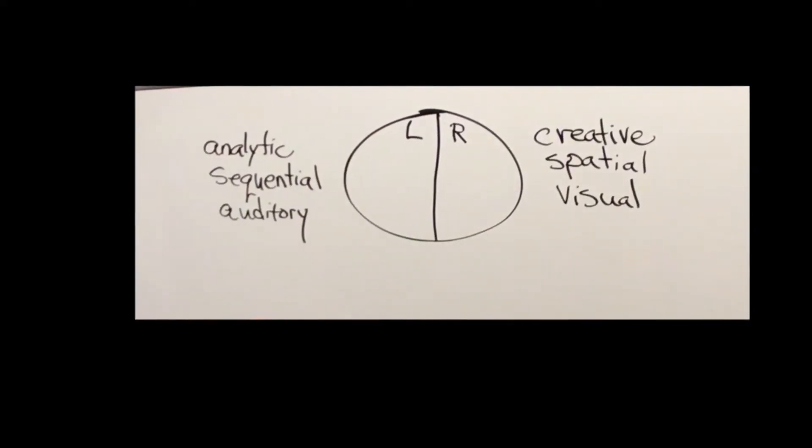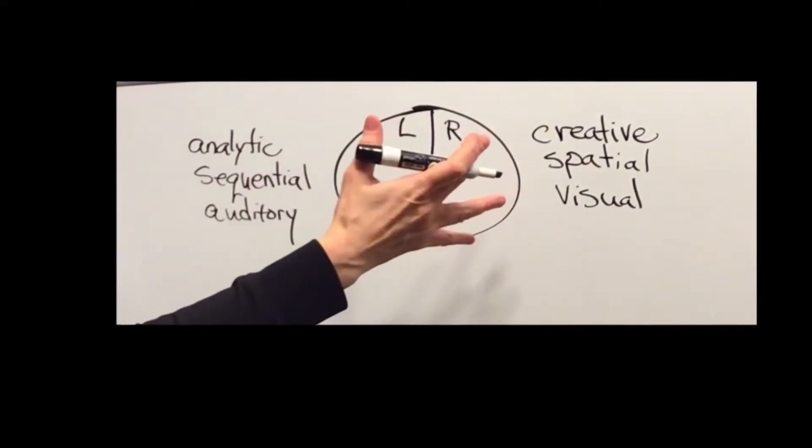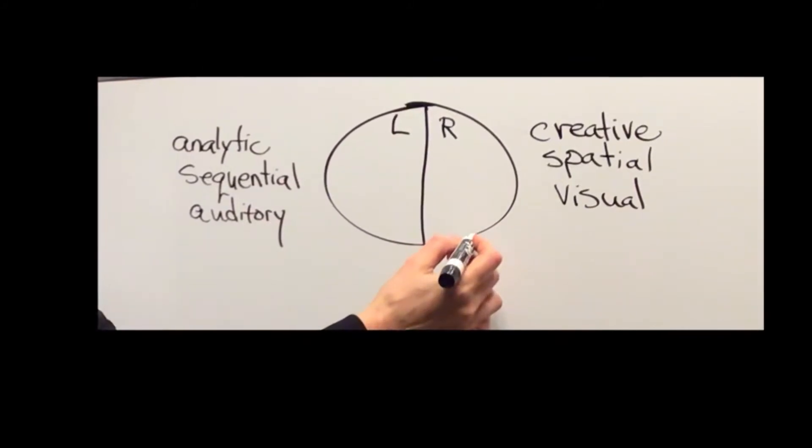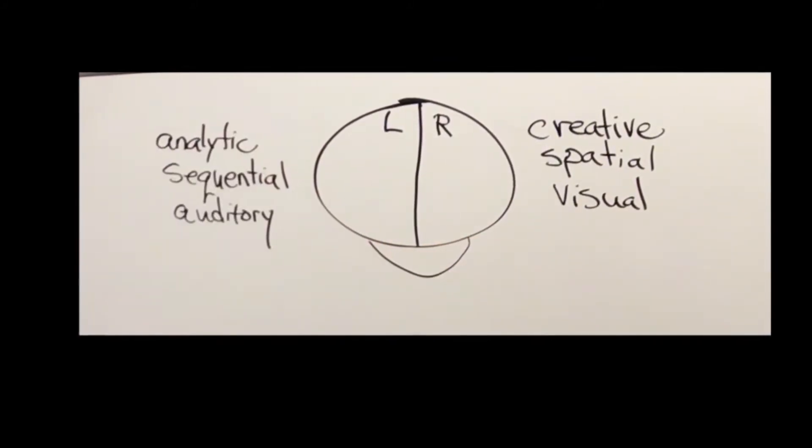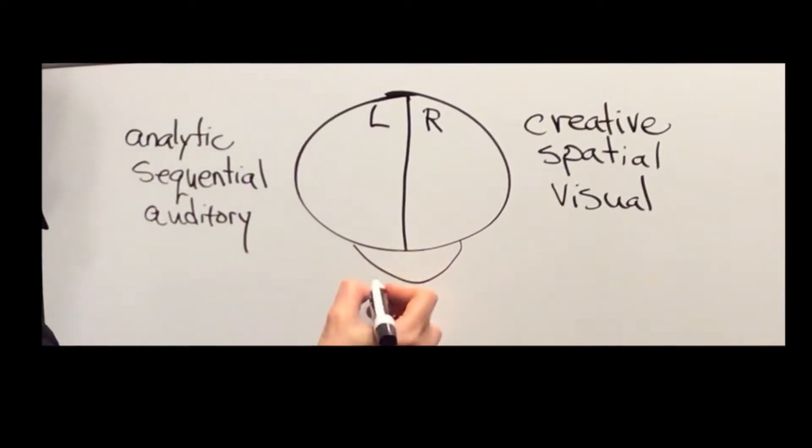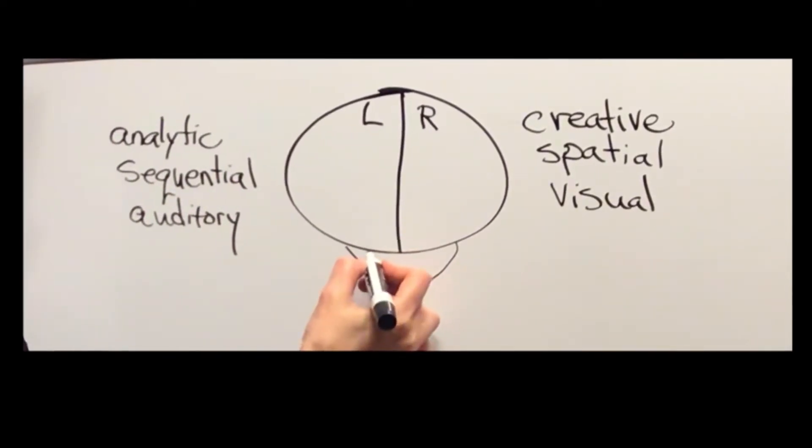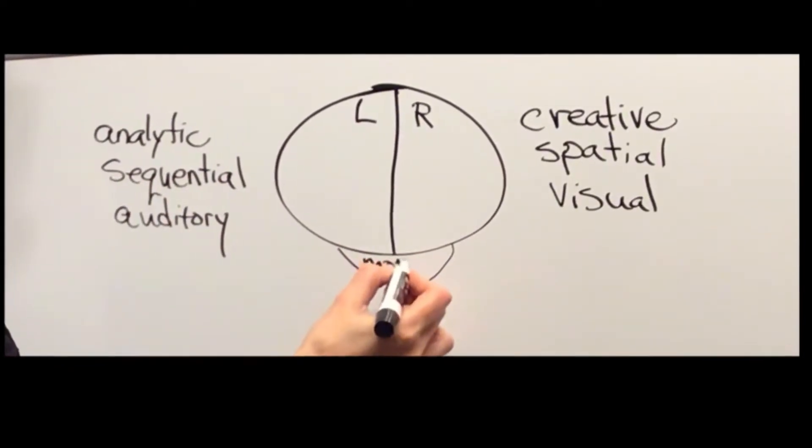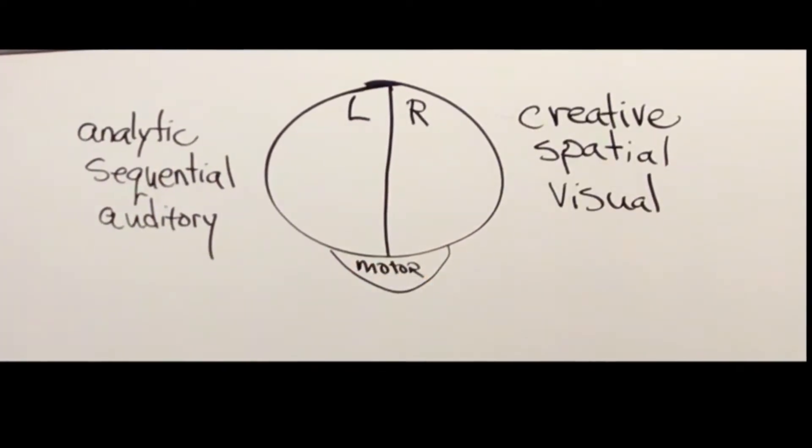Those are the two hemispheres of the cerebrum, and then at the base of the brain we have the cerebellum, and that is what we consider to be more of the motor control center of the brain.